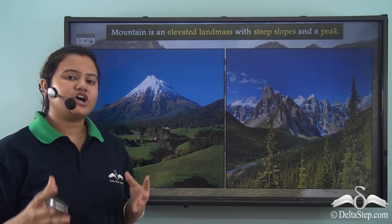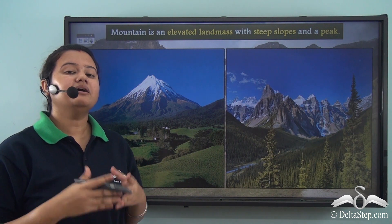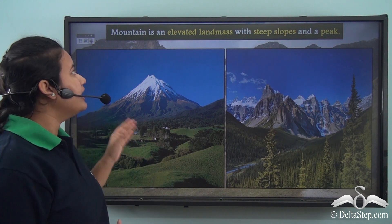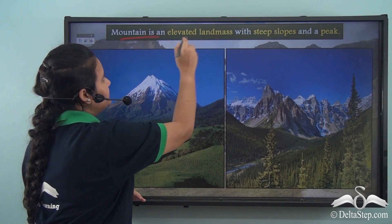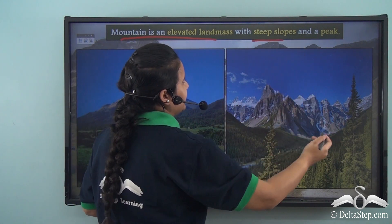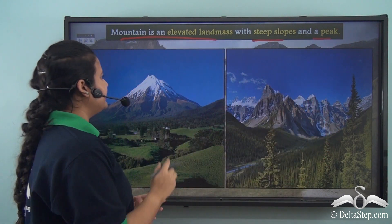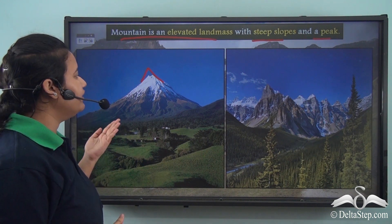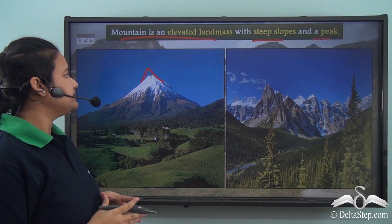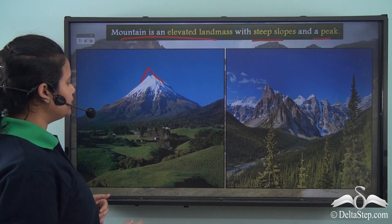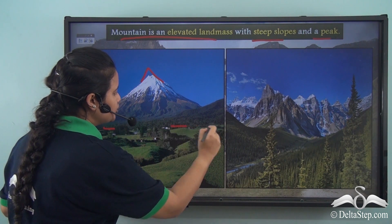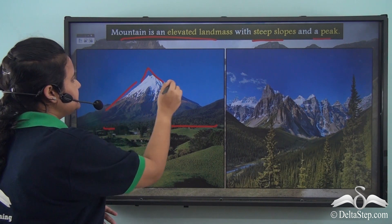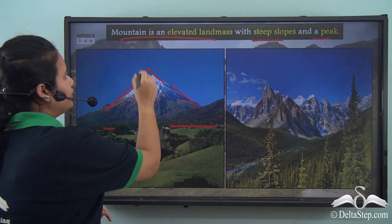The vast and gigantic Himalayas is a mountain. A mountain is an elevated landmass with steep slopes and a peak or a confined summit. Here we have a picture of a mountain, and we can see that it is quite tall compared to its surrounding areas, and also it has steep slopes and a peak or a summit.